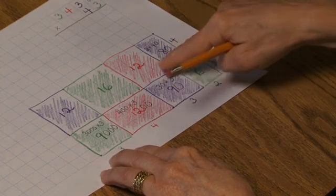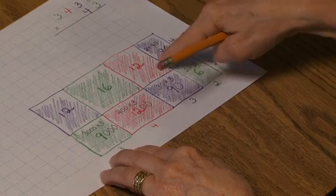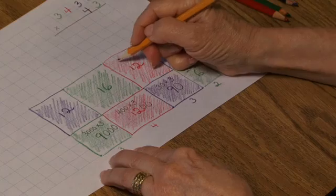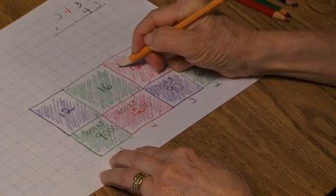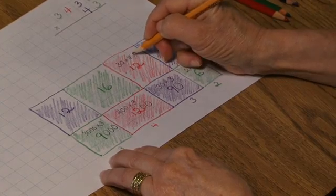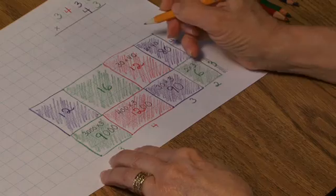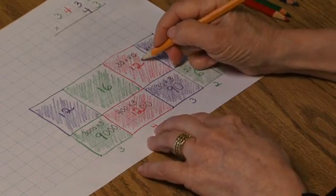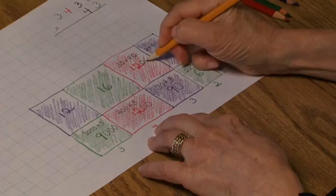12 hundreds, I can see that it's red. How did I get 12 hundreds as a product? 3 tens or 30 taken 4 tens or 40 times. 30 taken 40 times equals 12 hundreds.